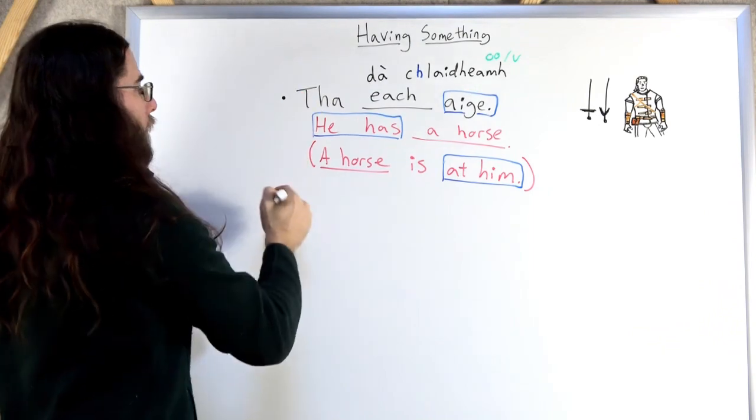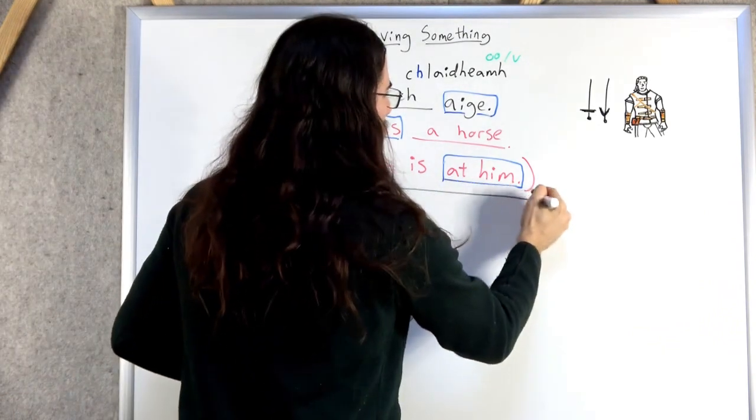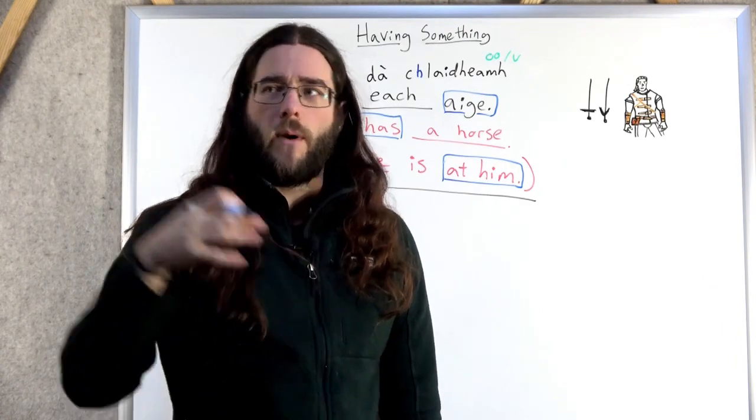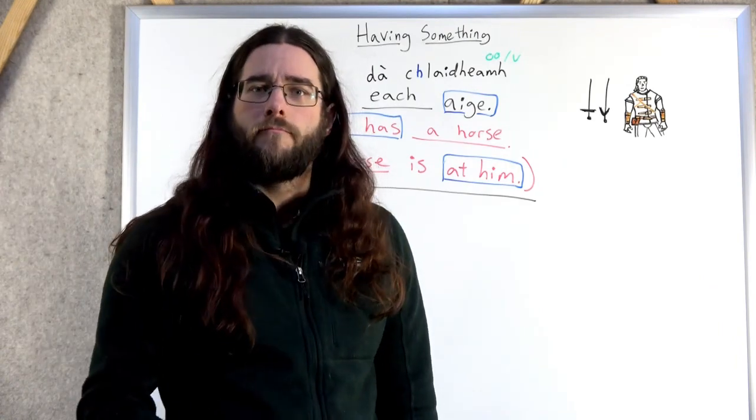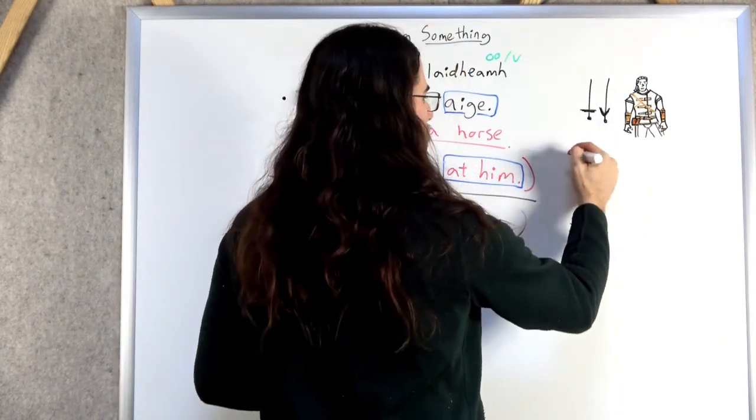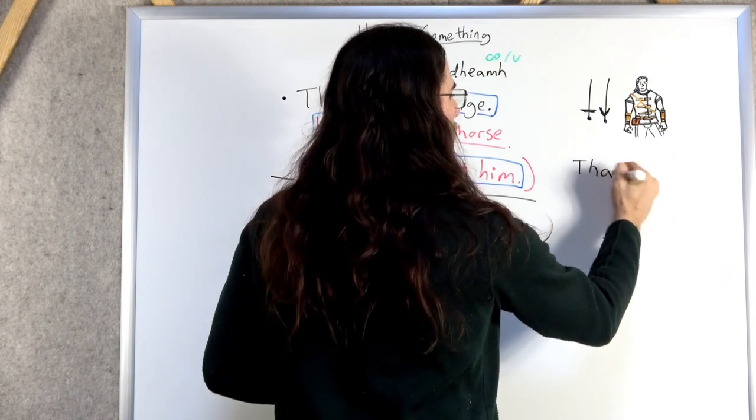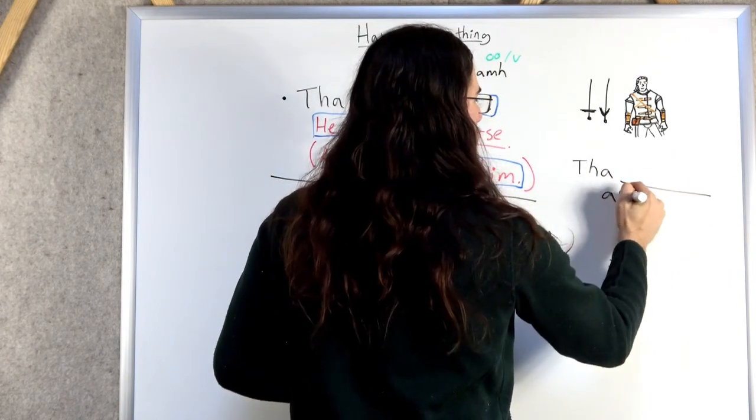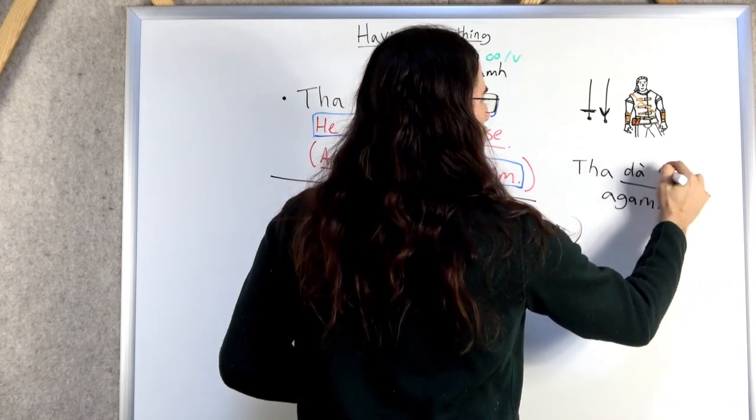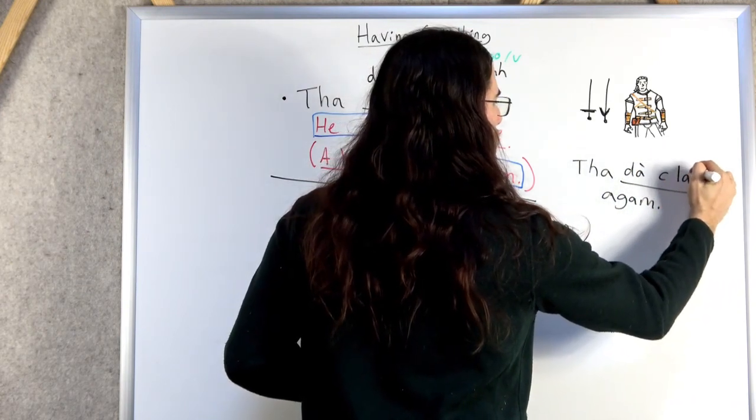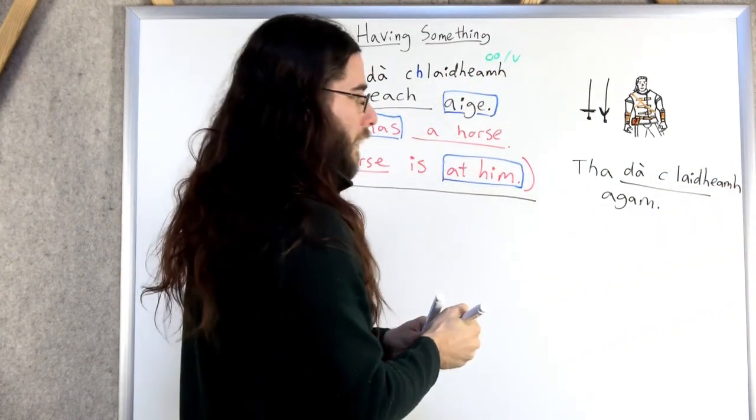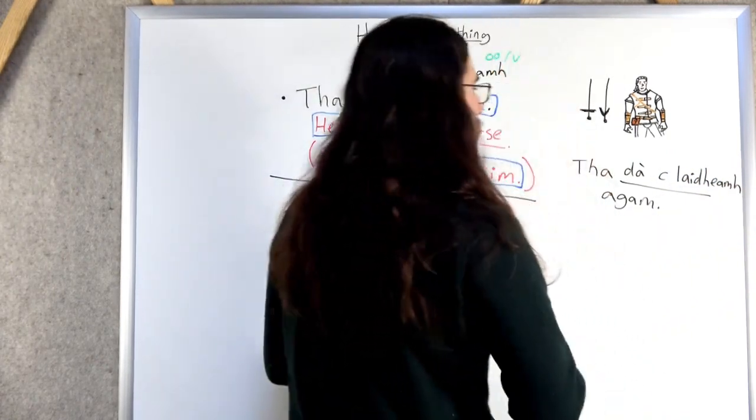Okay. Now, what about if you're speaking about yourself? We're not talking about him, or her, or them. You know, what about yourself? Well, if Geralt is speaking from his perspective, he'd say, ha, something, akam. Ha, da, khlayu. Getting close to the edge of the board there. Ha, da, khlayu, akam.